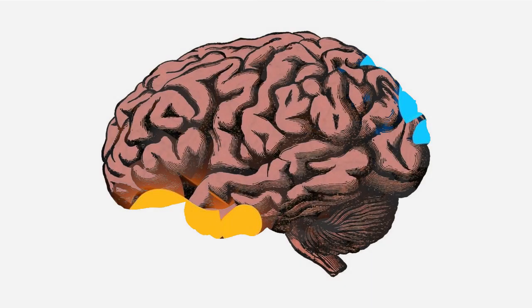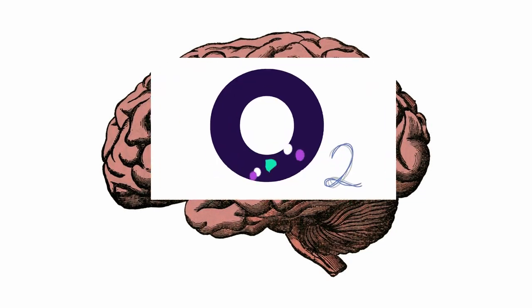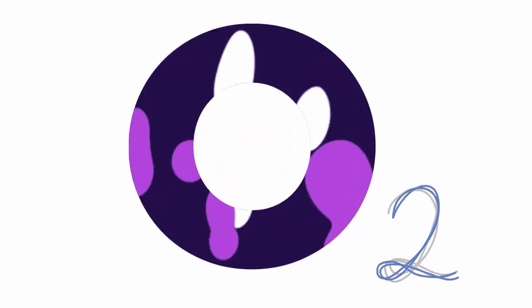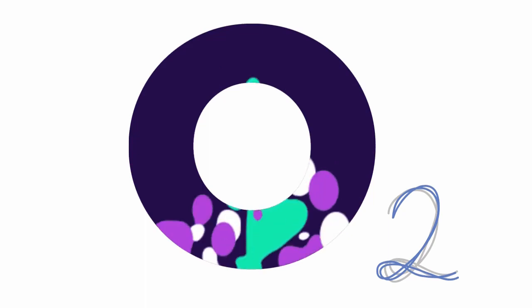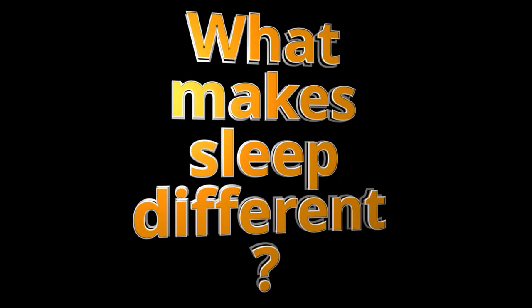Unlike common thought, sleep is a metabolically active state. This means that the brain uses as much oxygen as awake states during sleep. So, why is sleep different from awake states?